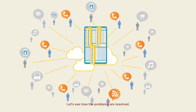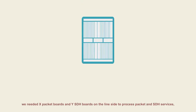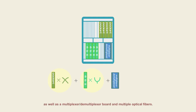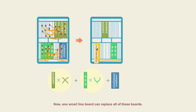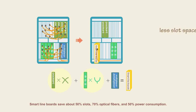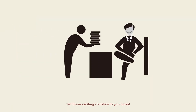Let's see how the problems are resolved. Before smart line boards were developed, we needed X packet boards and Y SDH boards on the line side to process packet and SDH services, as well as a multiplexer, demultiplexer board, and multiple optical fibers. Now one smart line board can replace all of these boards, saving about 50% of slots, 70% of optical fibers, and 50% of power consumption.